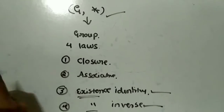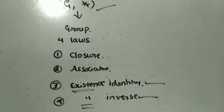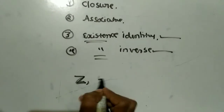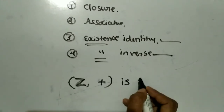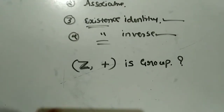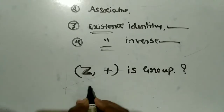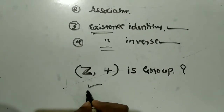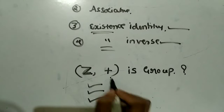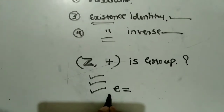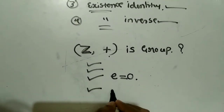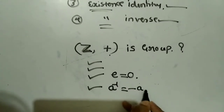As we checked in the previous class — integers Z with respect to plus: is this a group? Yes, it is a group. Why? Because closure law is satisfied, associative law is satisfied, and identity law is also satisfied. In Z-plus, the identity element is 0, and the inverse of any element A is minus A.